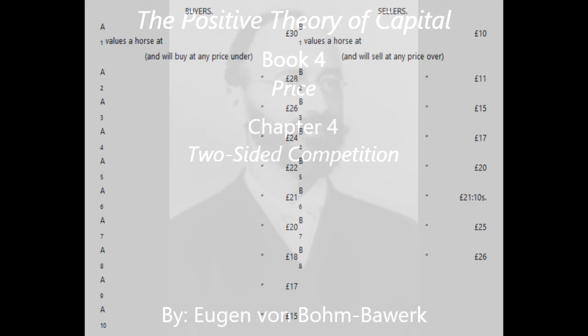On either side, it is the most capable competitors who come to terms, namely those buyers who put the highest value on a commodity, A1 to A5, and those sellers who put the lowest value, B1 to B5, while all less capable competitors are excluded. And indeed, if we look more closely, we shall find that the series of successful competitors includes all competing pairs arranged by capability between whom there exists the relation necessary for exchange, which is that the buyer considers the commodity worth more than the seller does. In our illustration, A5 considers B5's horse worth more than B5 himself does, and accordingly they can exchange with each other. A6, on the other hand, values the horse of B1 at 21, while B6 values it at 21 10s, and therefore cannot come to terms.